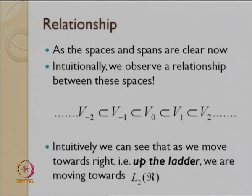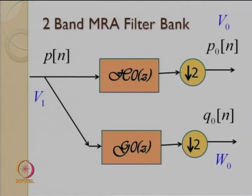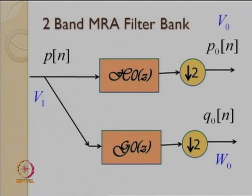We also saw the nested subsets and wanted to move up the ladder. We saw one peculiar way in which multi-resolution analysis can be implemented — a 2-band filter bank structure — and focused on the analysis part. This structure helps us move down the ladder. We posed the question: if I want to move up the ladder and keep adding details, what kind of framework will help me achieve that? In this lecture we are going to achieve the same.